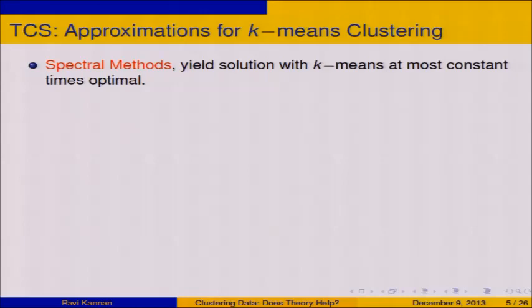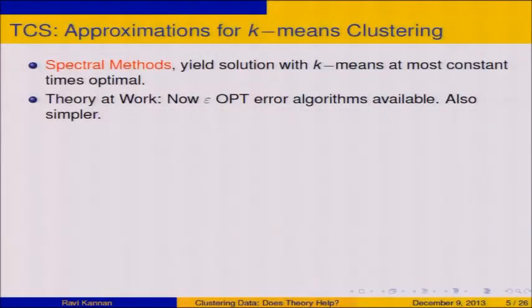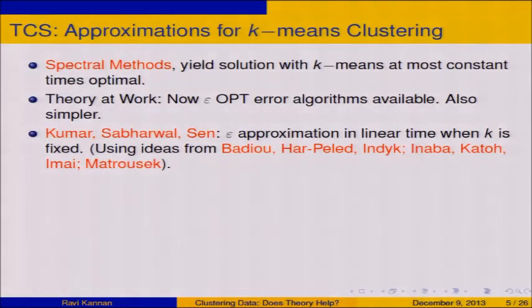Here is the slide of what we know at the current state of knowledge. First, spectral methods — they are quite old, and they're going to play a big role in this talk. Spectral methods yield a solution with k-means at most constant times optimal. And beyond this constant factor, the error can be made as small as epsilon times the optimal for any positive epsilon — relative error epsilon. These are now available for k-means, and over time they've become very simple. This is due to Kumar, Sabarwal, and Sen, about eight or nine years ago.